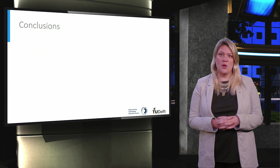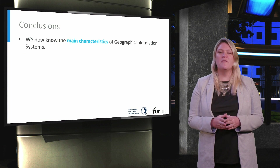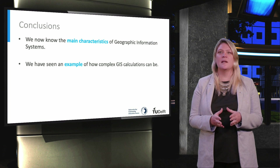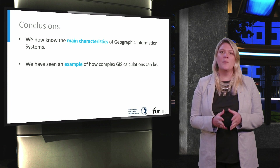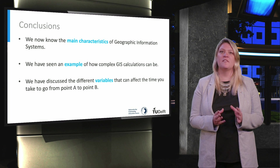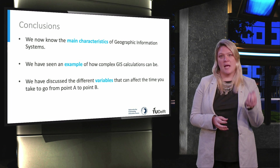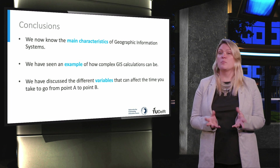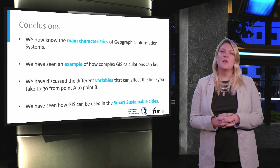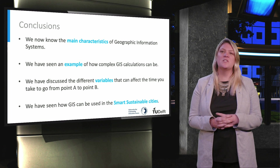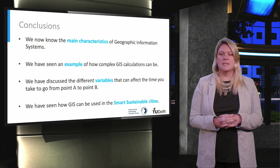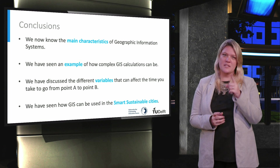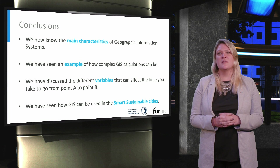We have reached the end of this video. Now you know what geographic information systems are. We have also described and explained how complex GIS calculations can actually be, and we have discussed the different variables that can affect the time you need to get from point A to point B — a very handy information system to have when navigating through a busy city. Finally, we have also seen different ways in which GIS can be used in smart sustainable cities. Can you think of any examples of GIS technology being used in your city? Please share your experiences on the discussion forum.